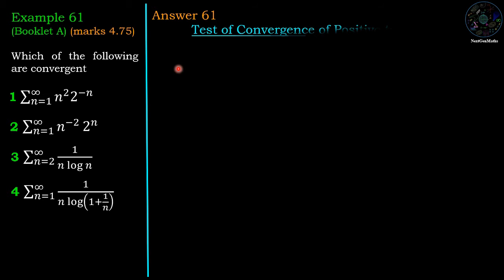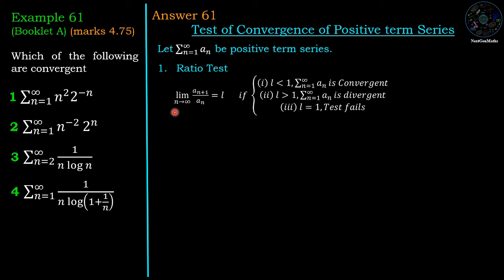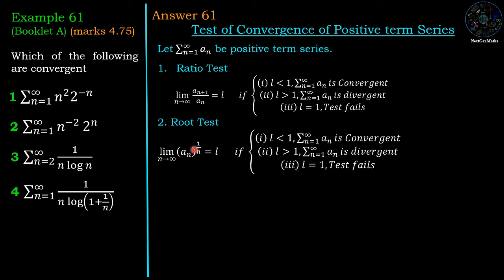First we recall some tests of convergence of positive term series. Let sigma a_n from n equal to 1 to infinity be a positive term series. First is the ratio test: limit n tends to infinity of a_(n+1) upon a_n equals l. If l less than 1 then the series is convergent, l greater than 1 series is divergent, l equal to 1 then the test fails to check the convergence or divergence of the series.